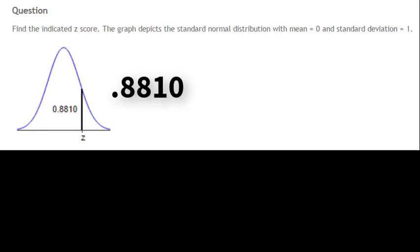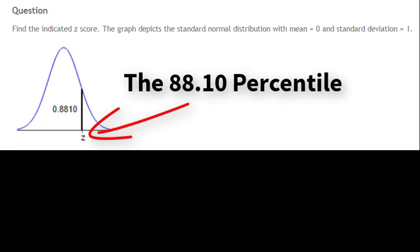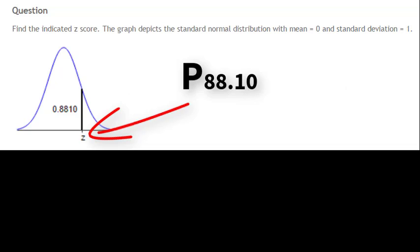Had this problem been given using a percent instead of a decimal, the percent would be 88.10%. The z-score associated with 88.10% is also referred to as the 88.10 percentile, or simply p subscript 88.10.